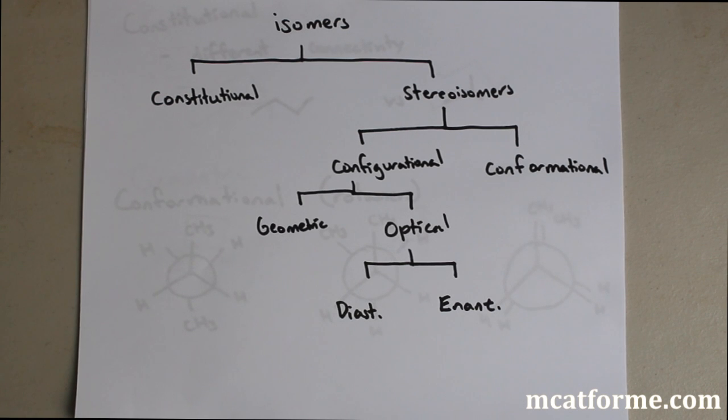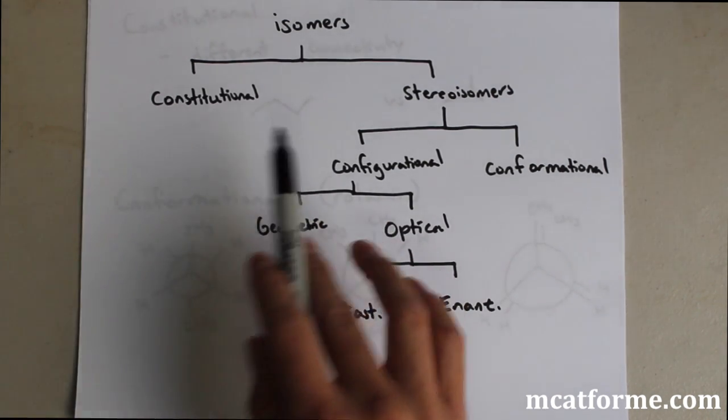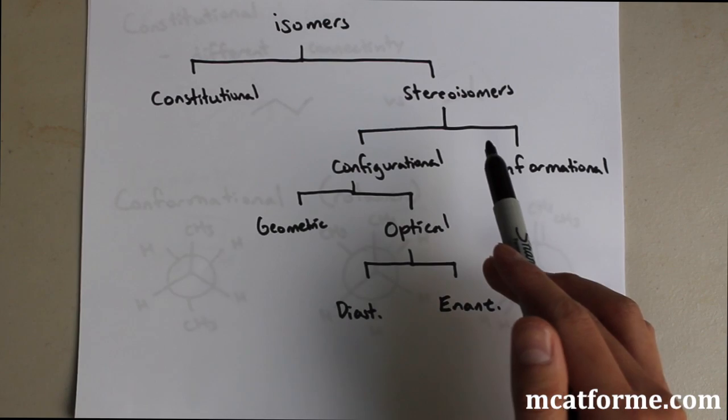So today's lecture is probably one of the most important for the OCAM part of the MCAT, which is isomers, identifying different types of isomers. The reason why is because for me personally, a lot of these names or different types of isomers I never actually saw in my OCAM classes. We only kind of dealt with maybe constitutional and maybe optical isomers. But there's actually a lot more than just that. There's a lot more classifications. And what we'll see is isomers are divided into constitutional and stereoisomers.